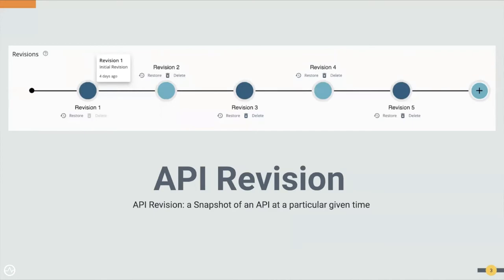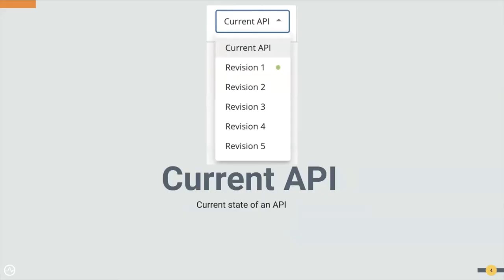First, let's get familiarized with the terminology used in this video. API revision is a snapshot of an API at a particular given time. For example, revision one depicted in the above picture is the state of the API four days ago. Current API is the current state of the API. The dropdown in the API can be used to switch between current API and revisions. This is the state where API developers can make changes to the API.